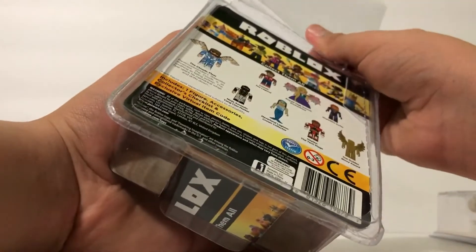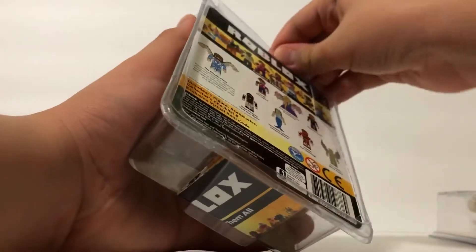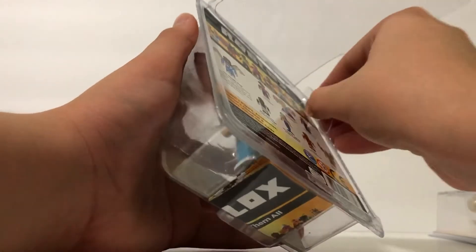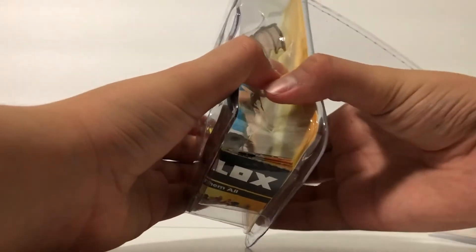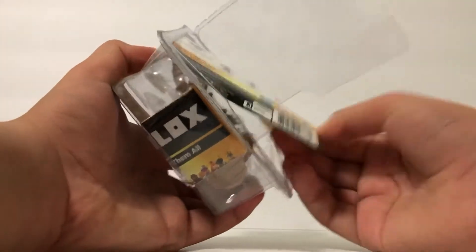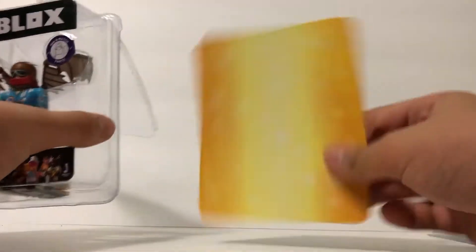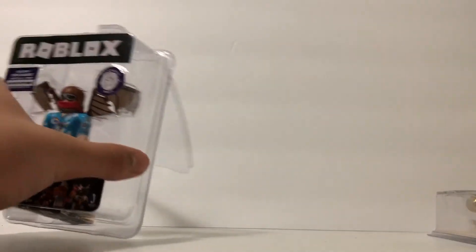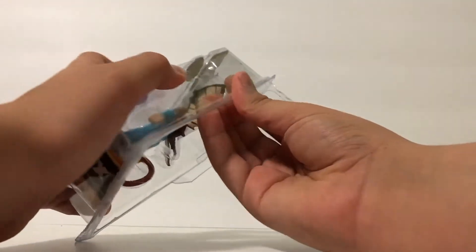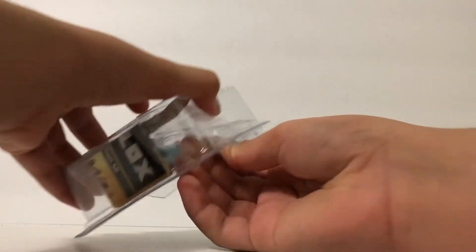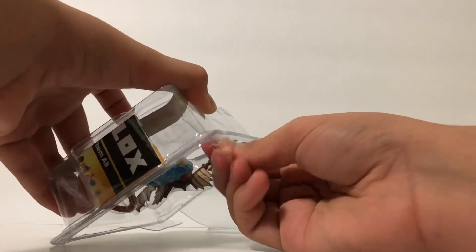This part has to pop out. Let's just pop this thing out. Okay, it popped out. The goldenness behind it looks cool for display, so I might actually keep both of them. Let's just pop out the figurine packet thing.